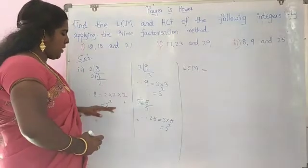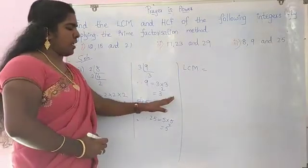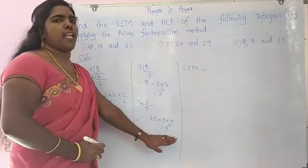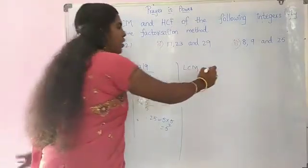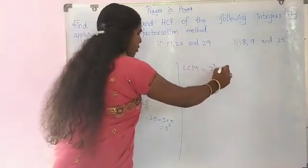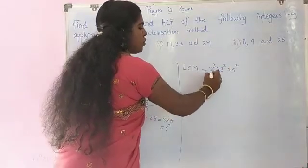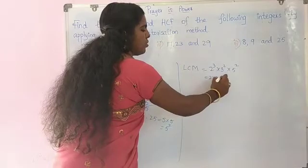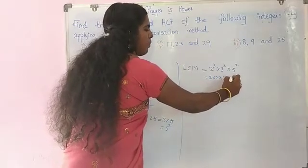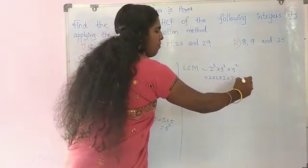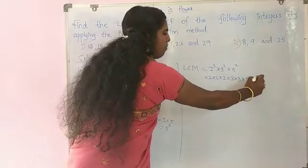Least common multiple means 2 cube into 3 square into 5 square. This is equal to 2 cube means 2 into 2 into 2, 3 square means 3 into 3, 5 square means 5 into 5.